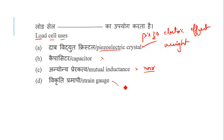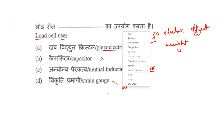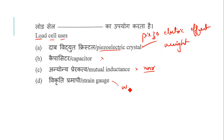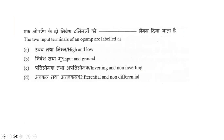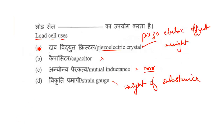Strain gauge is another name for a load cell. It is also a type of gauge which is used to measure the weight of a substance. So the right answer for the load cell question is the piezoelectric crystal.